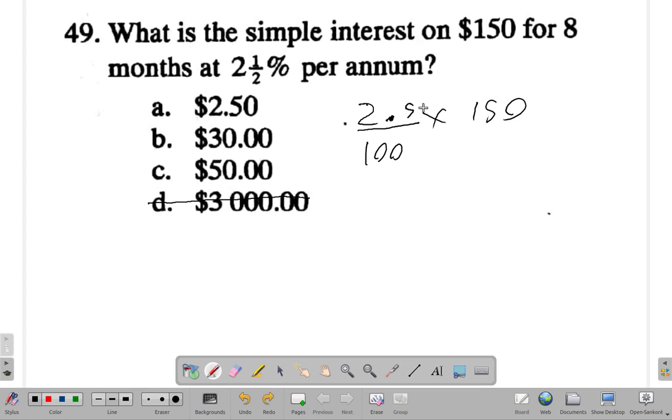I get 25 over 1000 times 150. So now I can say 10 into 150 goes 15, 10 into 1000 goes 100. I know that 25 into 25 is 1 and 25 into 100 is 4.